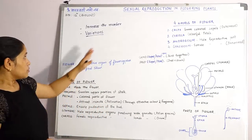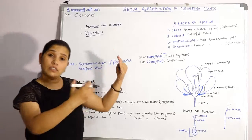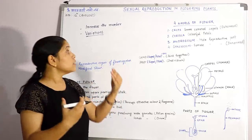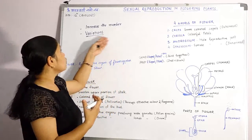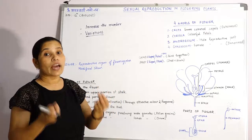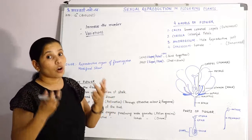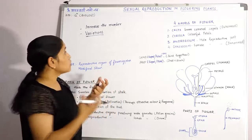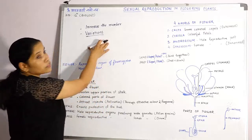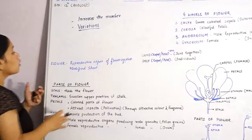The male and female sex cells produce certain kinds of characters which get mixed over time, and this causes variations to happen. So now we will study about the reproductive parts of the flower.